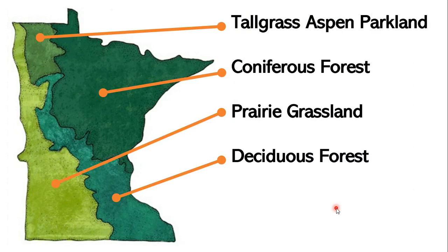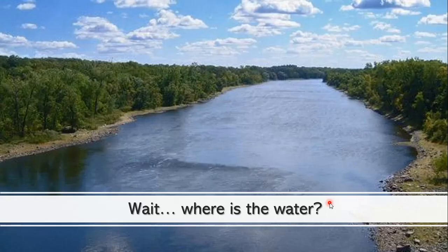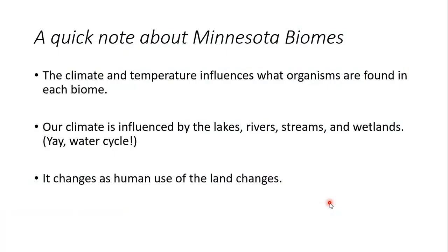The organisms found in biomes really influence the names of those biomes. Primarily, when biologists were picking names for the biomes of Minnesota, they were looking at what kind of trees and plants grow there — that's how they name them. So it's not that water is forgotten; it's just not in the names, but it's a part of the landscape.